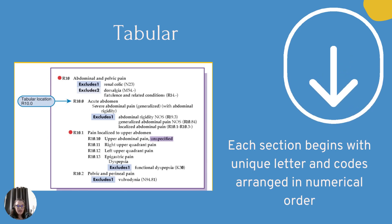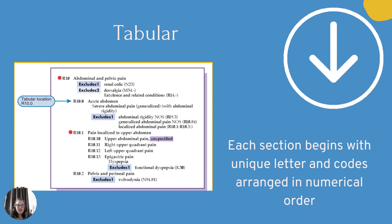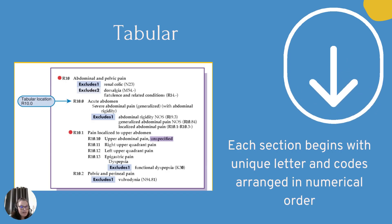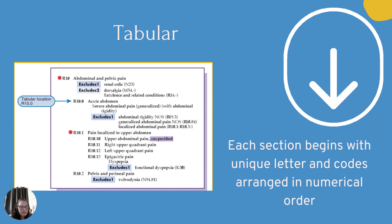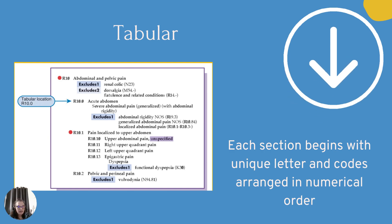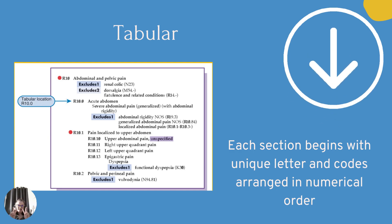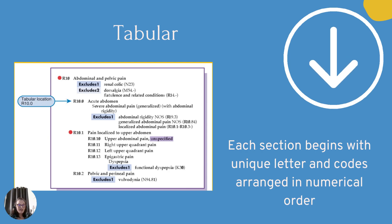Now let's move to the tabular. Each section begins with a unique letter and the codes are arranged in numerical order. Once you find your code in the index — for example R10.0 — you go to your tabular and look up the R's until you find that code. R10.0 is acute abdomen, and it has notes you need to review to make sure you're in the right area. You look it up in the index, then go to the tabular. You never code straight from the index — we always code two ways: look it up in the index, then go to the tabular to confirm the right code.